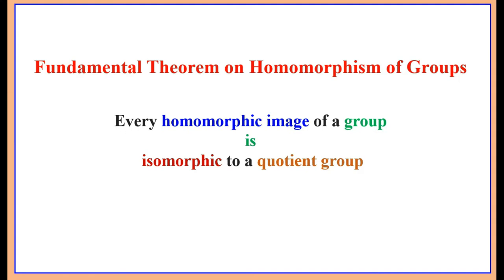We shall now prove the fundamental theorem on homomorphism of groups. In group theory, homomorphisms and isomorphisms are significant to study the relation between two algebraic systems. First introduced by Galois with the study of polynomials, it has applications in physics, chemistry, computer science, and puzzles like the Rubik's cube. A homomorphism maintains a map between two algebraic structures of the same type, such as two groups, two rings, two fields, or two vector spaces.